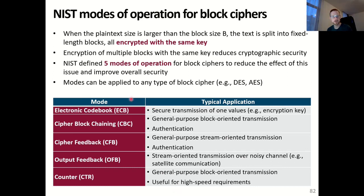Here you see a table which summarizes the five different modes. They are electronic codebook mode or ECB, cipher block chaining or CBC, cipher feedback mode or CFB, output feedback mode or OFB, and counter mode or CTR. Throughout this video, I will explain all of them in more detail.